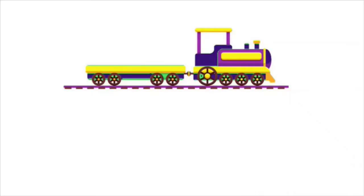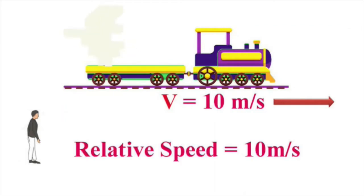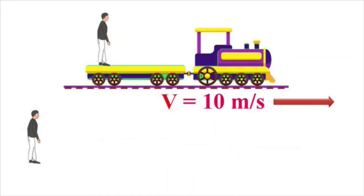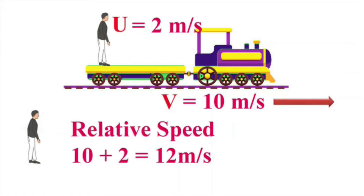Now imagine a train moving along the track at velocity V, and an observer watching the train. If the train is moving at 10 meters per second, then it will be 10 meters per second relative to the observer. Now imagine there's a man standing on the train walking along in the same direction as the train at 2 meters per second. So his relative speed to the observer will be 10 plus 2, which equals 12 meters per second. You simply add them together.